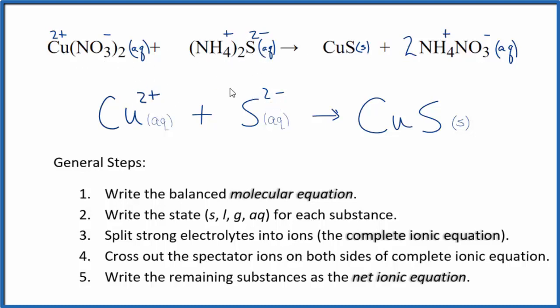You know, charges conserved. We have a 2 plus and 2 minus. That adds up to a net charge of 0. On the product side, this is a neutral compound. Net charge of 0. So charge is the same on both sides. And if you count the atoms, they're balanced as well.